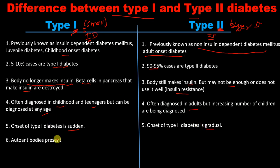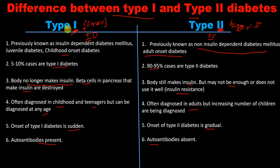Point number 6: type 1 is an autoimmune disease, so autoantibodies are present. Since type 1 is insulin dependent, autoantibodies are present. In type 2 diabetes mellitus, it is insulin independent, so autoantibodies are absent. This is a helpful way to memorize the distinction.